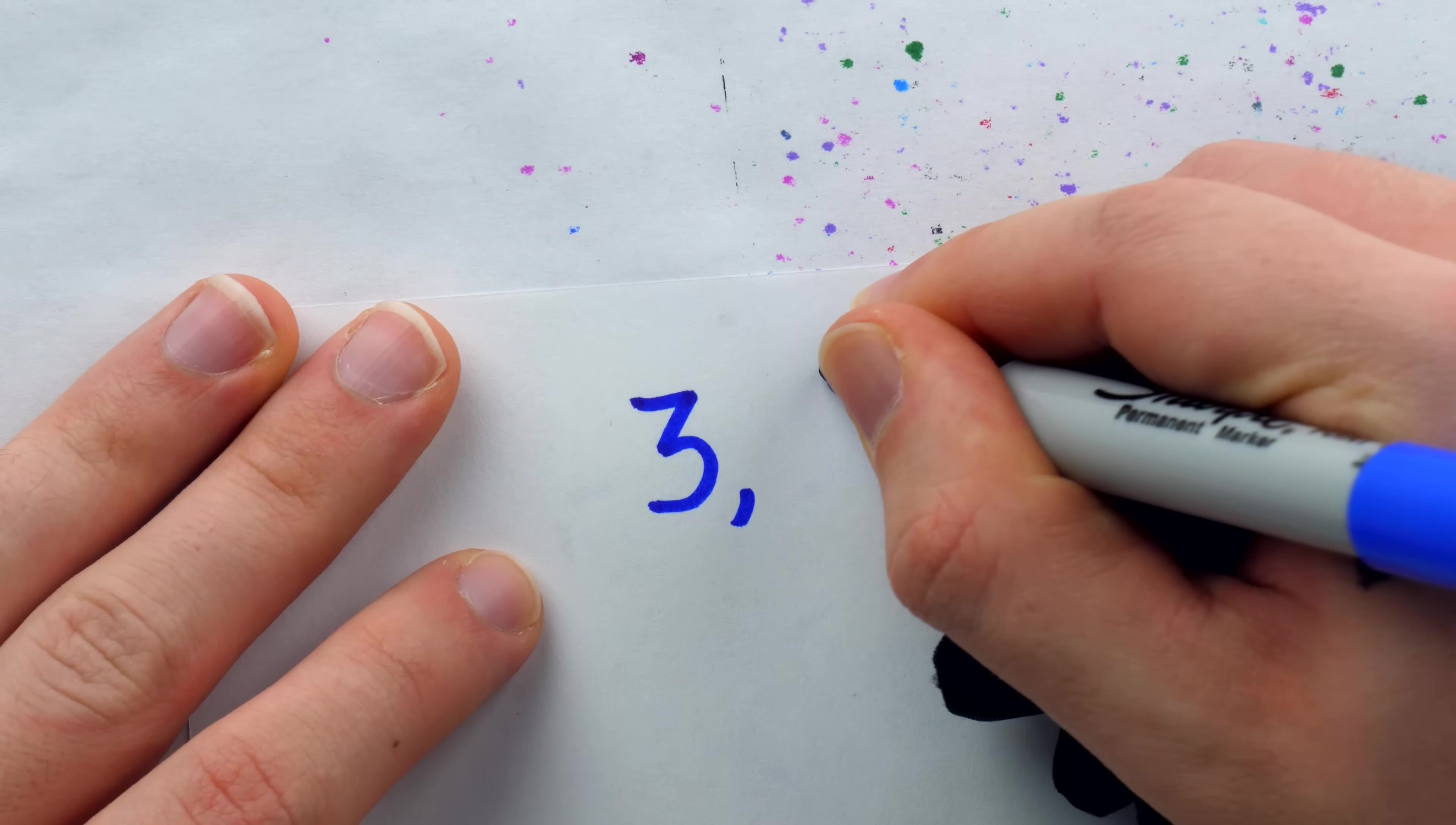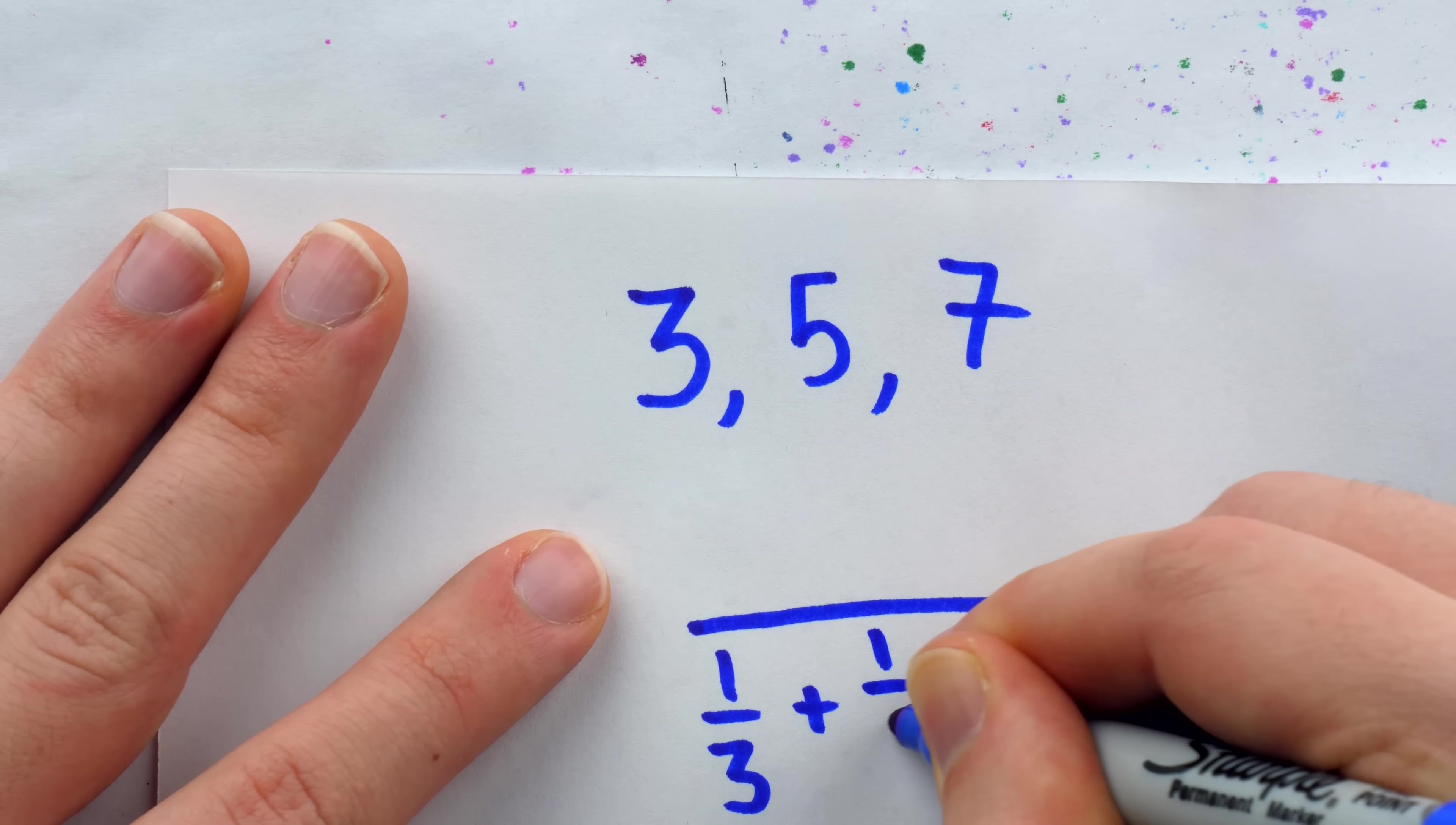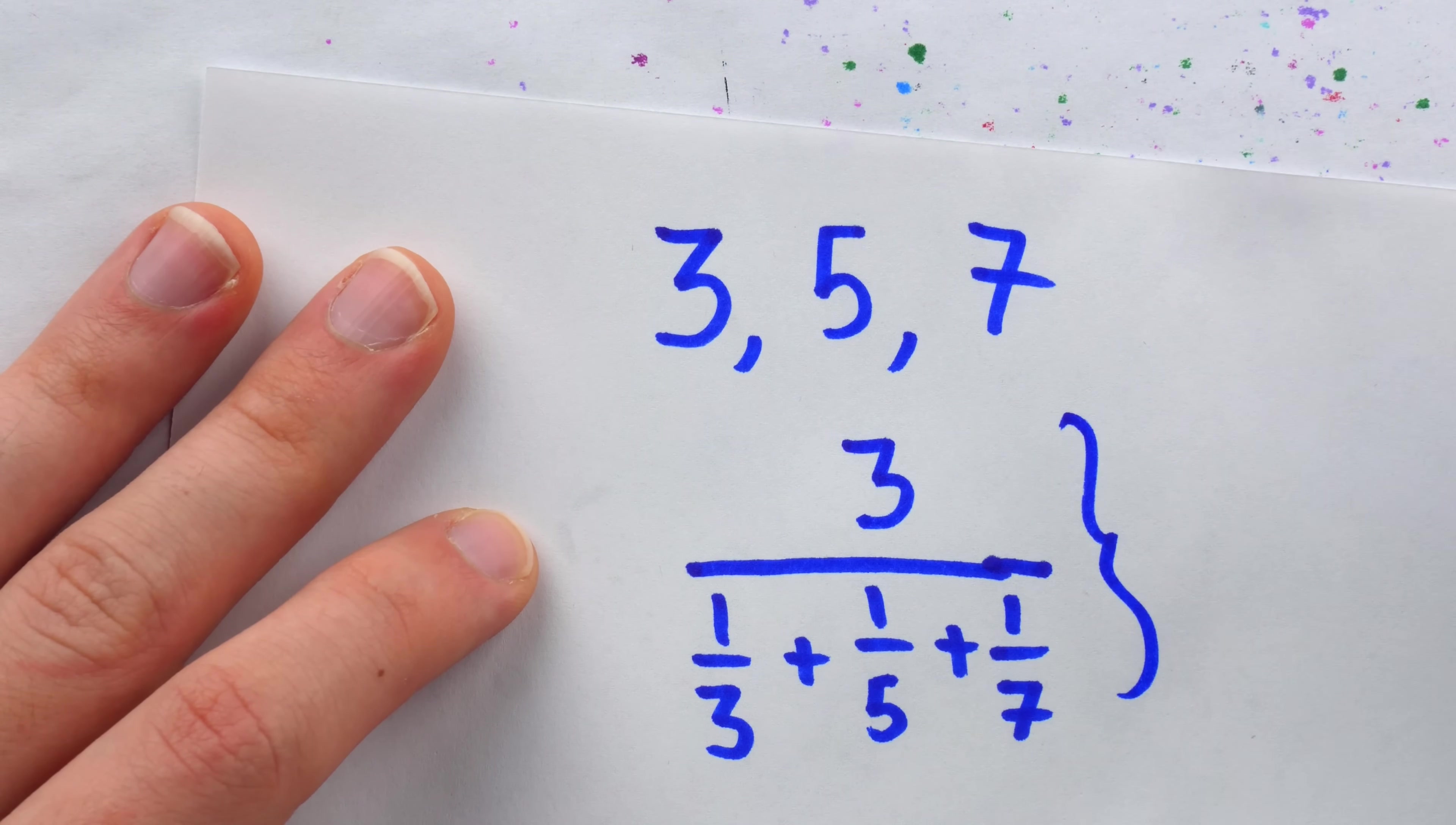As a quick example, if we were looking at the numbers 3, 5, and 7, the harmonic mean would be the reciprocal of the sum of the reciprocals of those numbers. So 1/3 plus 1/5 plus 1/7 all in the denominator. And this needs to get multiplied by the number of numbers. In this case, 3. So that's just an example of the harmonic mean.